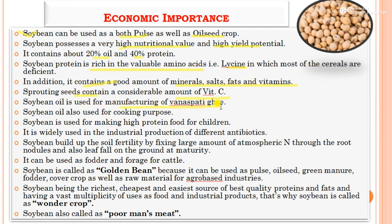Soybean oil is used for manufacturing Vanaspati Ghee and also for cooking purposes. Soybean is used for making high-protein food for babies and children, and is widely used in the industrial production of different antibiotics. Being a leguminous crop, it has the capacity to build up soil fertility by fixing large amounts of atmospheric nitrogen through root nodules. Leaf fall at maturity adds organic matter into the soil, and it can also be used as fodder for cattle.